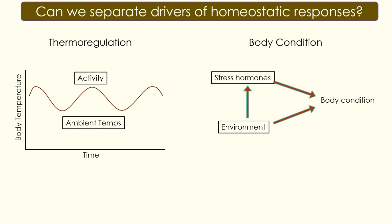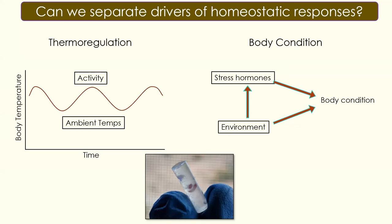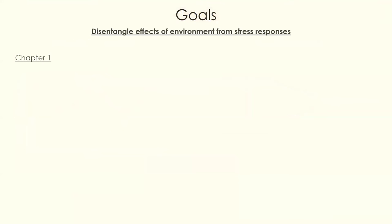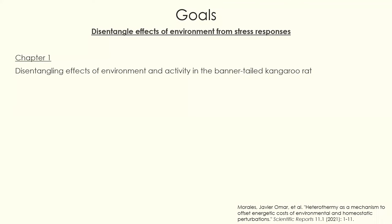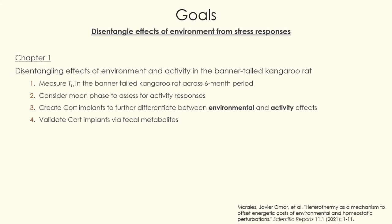In situ studies make it difficult to disentangle all these effects. I used pharmacological implants of corticosterone to help tease these things apart — an approach mostly done in lab studies. The goals of my thesis were to disentangle the effects of environment from stress responses. My first chapter, published in Scientific Reports, focused on disentangling the effects of environment and activity in the Bannertail kangaroo rat, measuring body temperature across a six-month period and considering moon phases to assess activity responses.